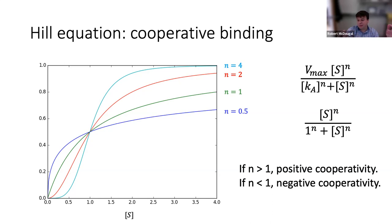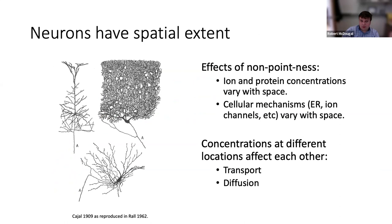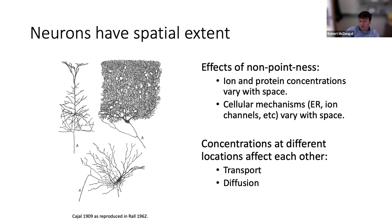Those are all the dynamics that can happen at a point: mass action as the default, then enzymatic reactions, then cooperativity with a power term. But neurons have spatial extent, as Cajal illustrated beautifully, so not only does membrane potential vary with space — so do ion and protein concentrations. A molecule in a dendrite can't interact with one in the axon directly, but they can eventually interact through diffusion and transport, which is diffusion combined with a series of reactions.